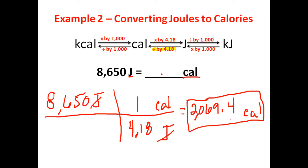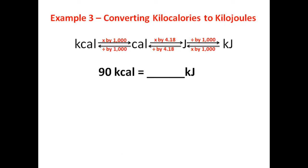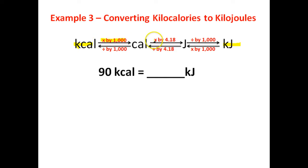Let's take a look at another example. In this example, we are going to convert kilocalories to kilojoules. So we are starting right here at kilocalories and we want to go to kilojoules. This looks like it's going to be a three-step problem. The first thing I'm going to need to do is multiply by 1,000 — that will convert kilocalories to calories. Then we need to multiply by 4.18, which will turn the calories into joules. And then we need to divide by 1,000, which will turn the joules into kilojoules.